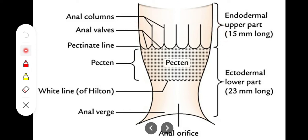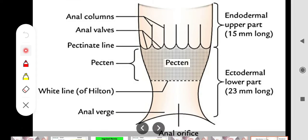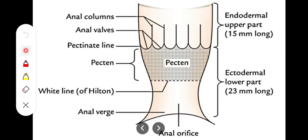The uppermost portion, the mucous part, is about 15 mm long and consists of longitudinal ridges called anal columns. The anal columns are connected inferiorly with each other by mucous membrane folds called anal valves. On top of each anal valve there is a depression called the anal sinus, and within the anal sinuses we have anal glands which produce certain secretions. This upper one-third is derived from endoderm.